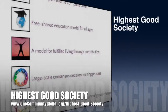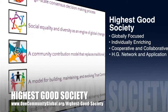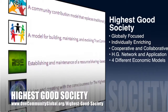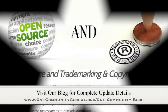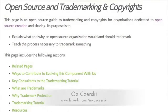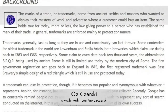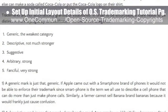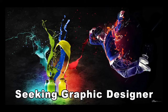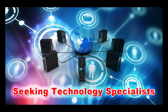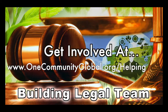The One Community approach to highest good society is globally focused, individually enriching, cooperative and collaborative, includes a highest good network and application, four different economic models, and combines fulfilled living and true earth stewardship for the benefit of all people and all life on this planet. This last week the core team continued editing and formatting the work of Oz Chersky, a lawyer specializing in trademark and copyright law. This included a final round of edits to the open source and copyrights tutorial and setting up the initial layout for the open source trademarking tutorial page — we're 50% complete with that. In this area we're seeking graphic designers, web designers, technology specialists, videographers, and building a highest good legal team.